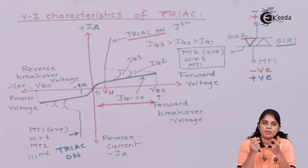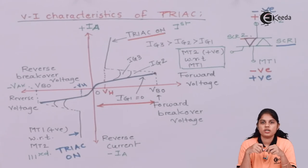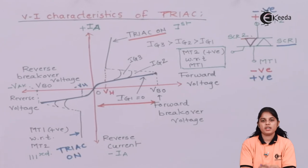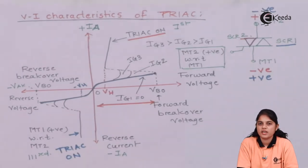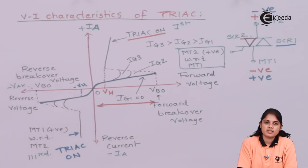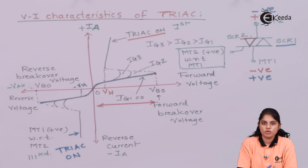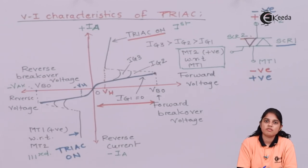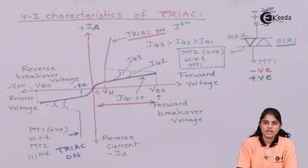In applications where continuous switching of the device is required, a TRIAC can be utilized over an SCR. However, one disadvantage is that the power handling capacity of an SCR is greater than a TRIAC, so SCRs are preferred as switching devices for high-power applications. The TRIAC has three states: forward blocking state, reverse blocking state, and on-state — where the on-state can occur in either the forward or reverse characteristics region.